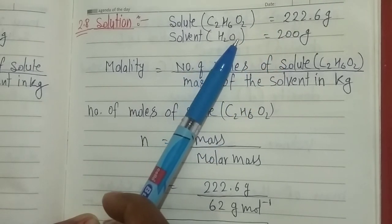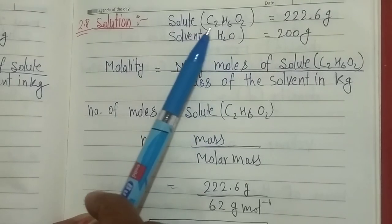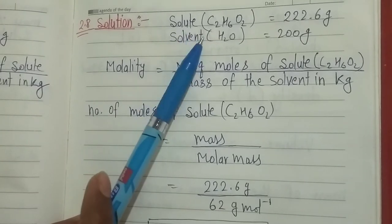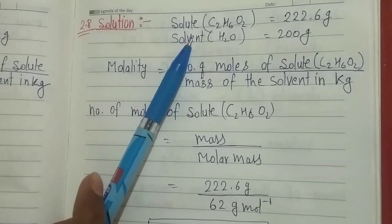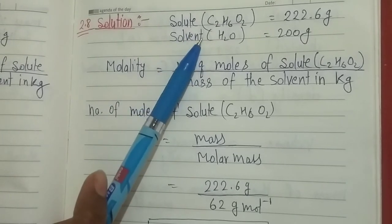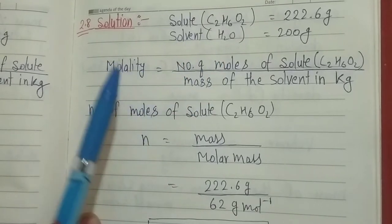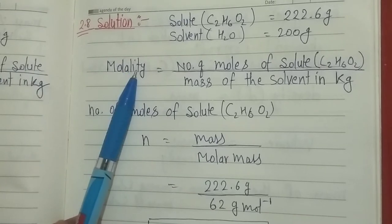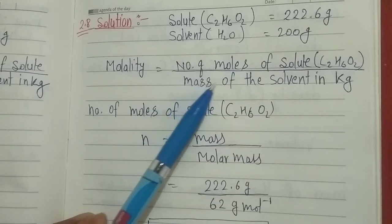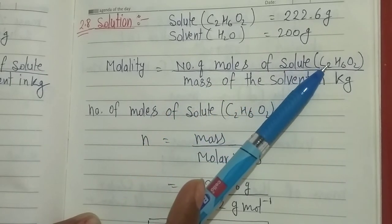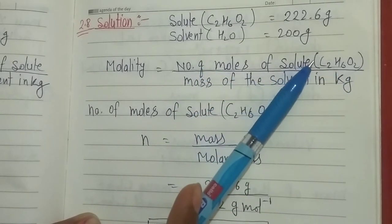Water will work here as the solvent, because generally when we make a solution with water, we assume water as the solvent. Now, molality is equal to the number of moles of solute divided by the mass of the solvent in kilograms. The solute is C2H6O2, ethylene glycol. First of all, we need to calculate the number of moles of solute.